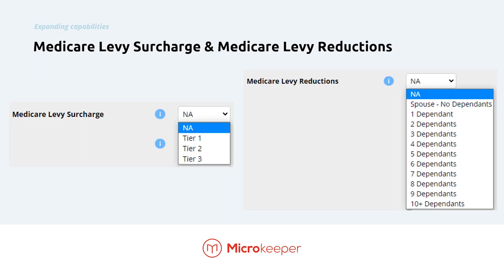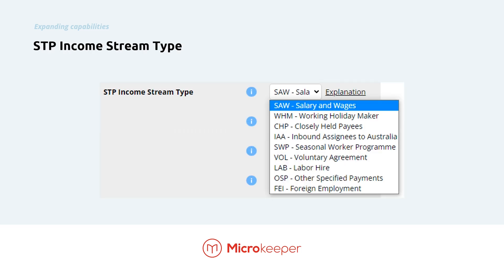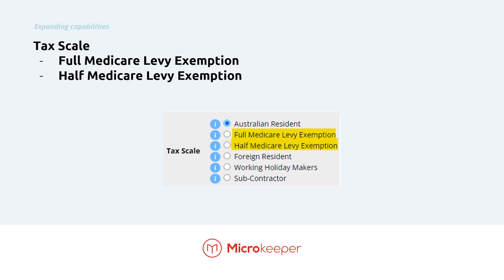Now we can jump to the last area, which covers some of the new capabilities. There's a new Medicare levy surcharge and Medicare levy reduction — the details are in the guides for those who want to read up on them. There are now nine income types. Most of you will be familiar with SOAR, which is just a rename of the old individual non-business IND, and working holiday maker. We've also added to the tax scale the full Medicare levy and half Medicare levy exemptions. Whilst this isn't currently included during onboarding, it's something that could be offered to staff going forward.